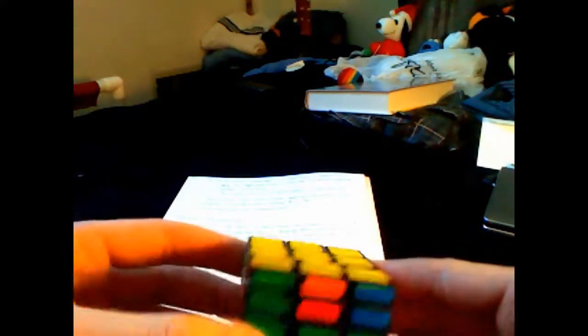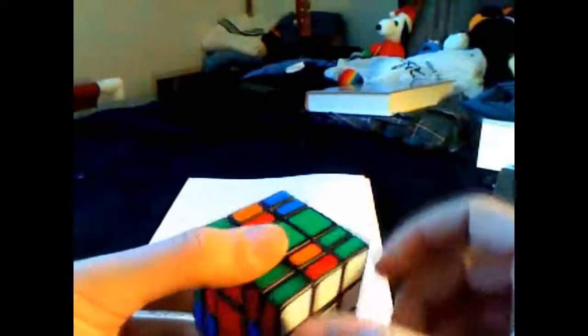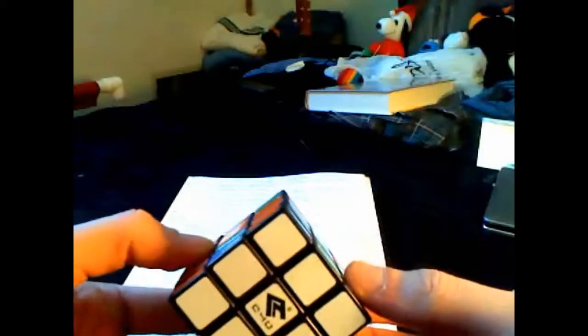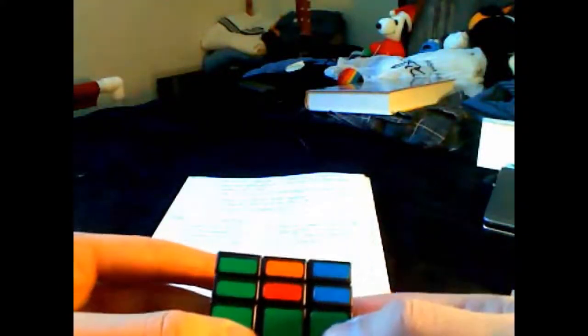Step 5 is to solve all eight edges on the bottom and top layers. At this point your 3x3x5 should look something like this. Using only one algorithm and its two variations, we will be able to turn the puzzle to a 3x3x3 and then solve it.